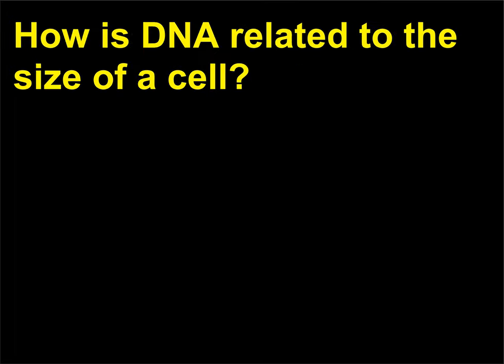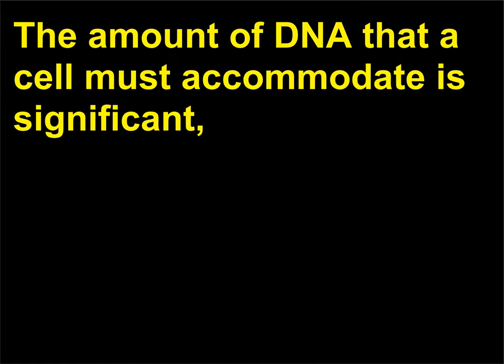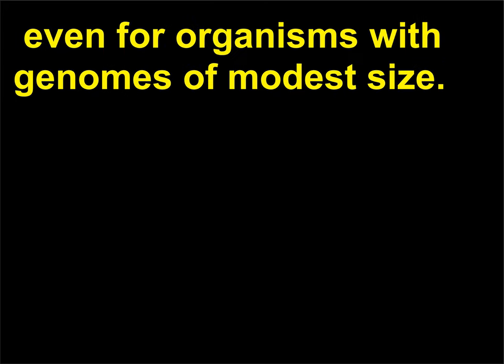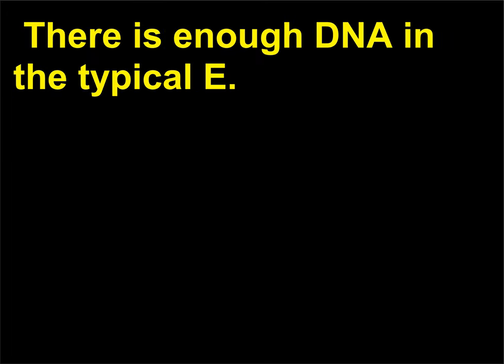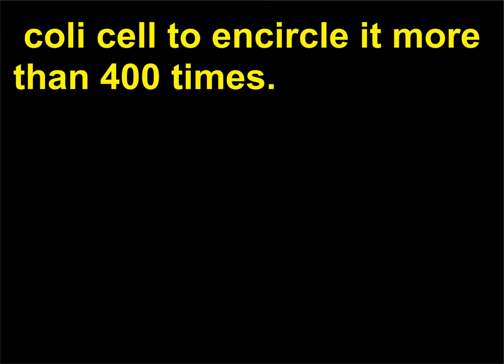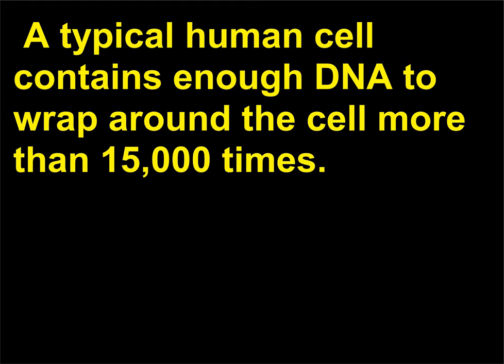How is DNA related to the size of a cell? The amount of DNA that a cell must accommodate is significant, even for organisms with genomes of modest size. There is enough DNA in the typical E. coli cell to encircle it more than 400 times. A typical human cell contains enough DNA to wrap around the cell more than 15,000 times.